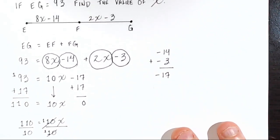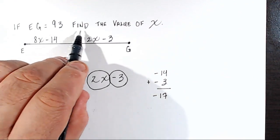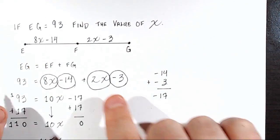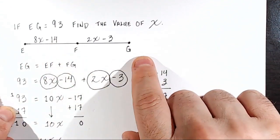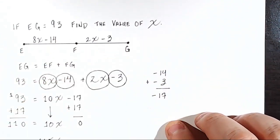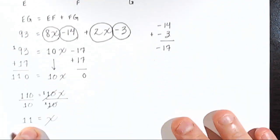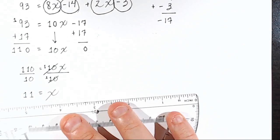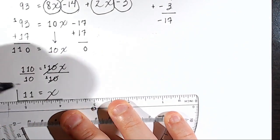All right? So we solved the problem. It said, if EG equals 93, find the value of X. Well, that means that if EG equals 93, then X equals 11. All right? So that's the answer to that problem.